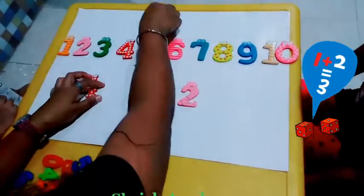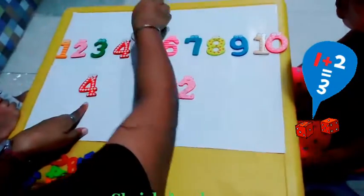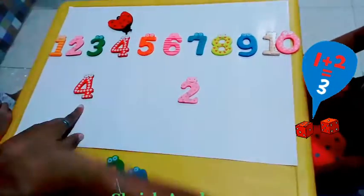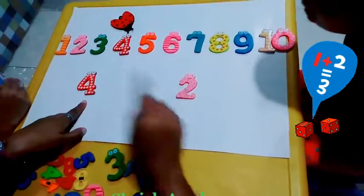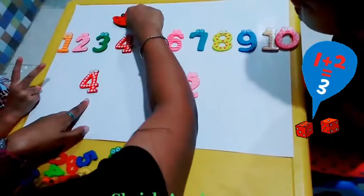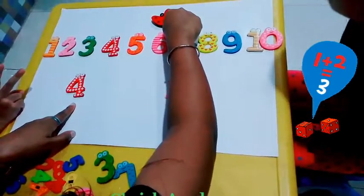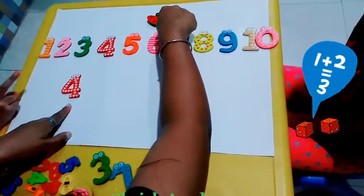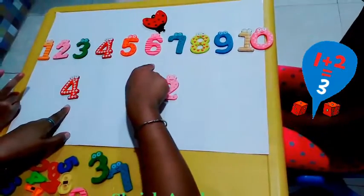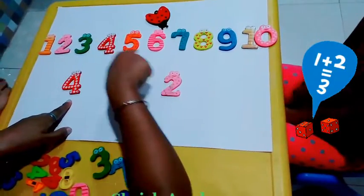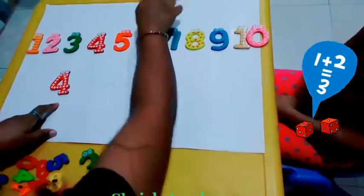Now if the bug is standing on 4, and I told him to jump till 2. So 1, 2. He is standing on 6. So 4 plus 2 is 6.